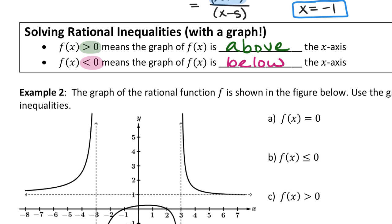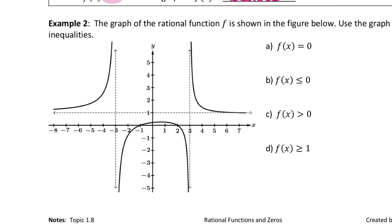From a graph it's easy because it's visual. We highlight everywhere the function is above zero in green — there are three such sections. The two sections below the x-axis get highlighted separately. We also identify where the graph is exactly equal to zero, marking those x-intercepts.